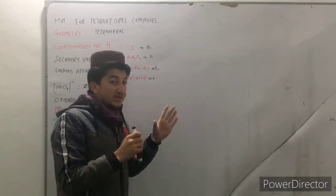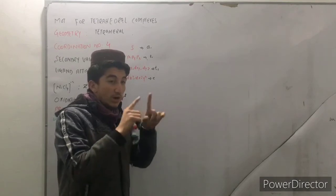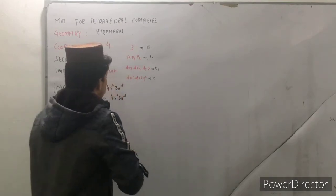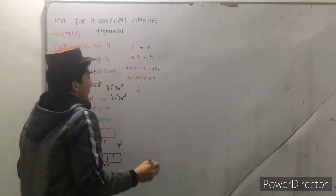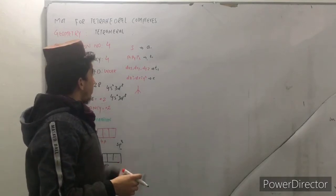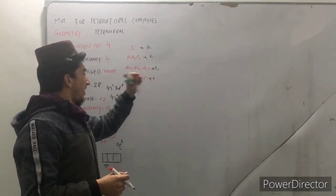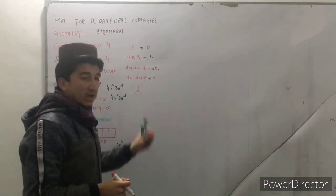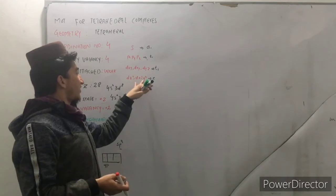The g and u is studied in that case which have center of symmetry which is related to octahedral complexes. But in this case the tetrahedral complexes don't have center of symmetry so that's why we don't mention u and g. This t is triply degenerate state and e is used for doubly degenerate state.